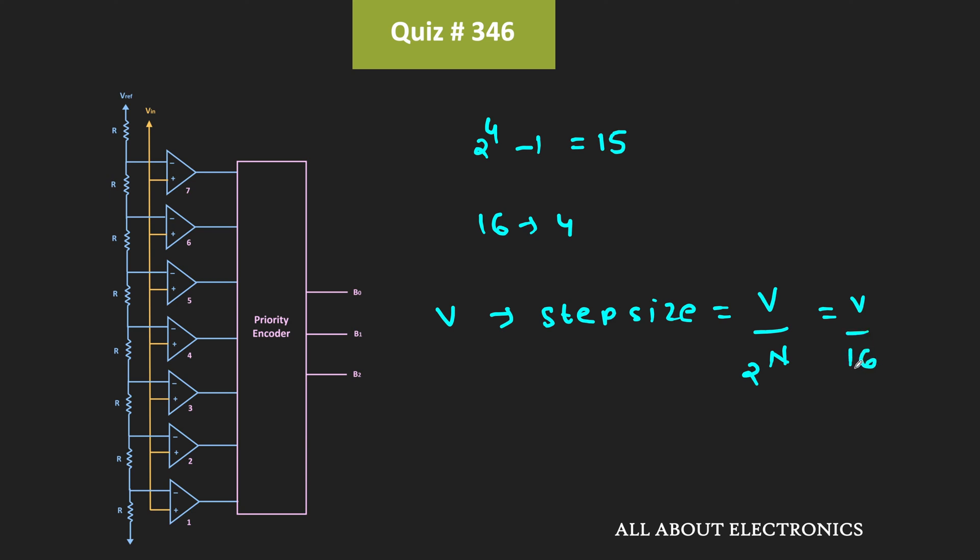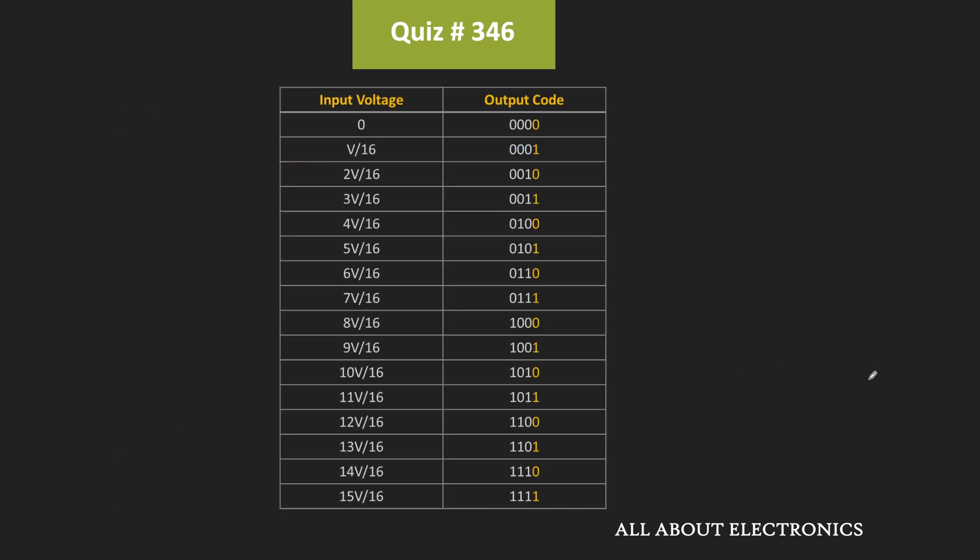That means as the input voltage changes by V by 16 volts, then we will see the change in the output code. That means this step size is the minimum input voltage that can be detected by this 4-bit ADC. So here is the list of the different input voltages and the corresponding output code. As you can see, as the input voltage changes by V by 16 volts, then there is a change in the output code by 1LSB.